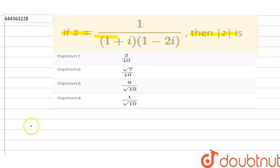Now what you do is just rationalize this complex number z. So this will put z upon this is 1 upon (1+i)(1-2i).